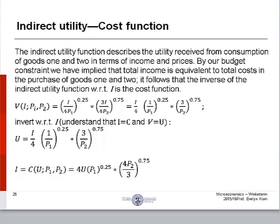Indirect utility to cost function. The indirect utility function describes the utility received from consumption of goods one and two in terms of income and prices. By our budget constraint, we have implied that total income is equivalent to total costs in the purchase of goods one and two. It follows that the inverse of the indirect utility function with respect to I, income, is the cost function.